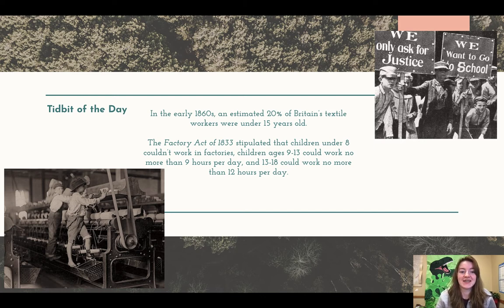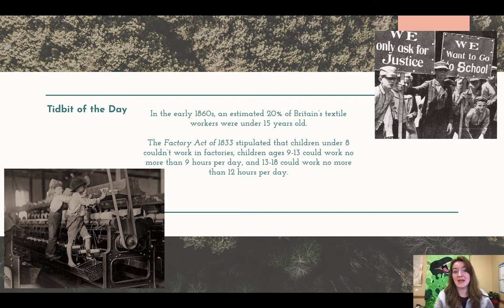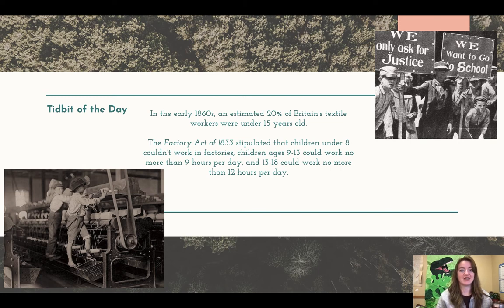Remember, this is Industrial Revolution era. There were nine to 13 year olds working more hours in a day than probably your parents do. And 13 to 18 were working literally half the day, probably every day of the week, because there were no mandatory two-day weekends. They maybe had Sundays off because Sunday was the Sabbath — the day you go to church, the day of rest.